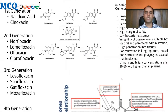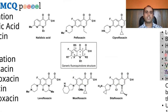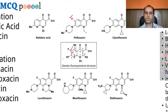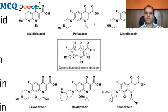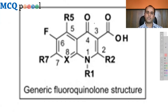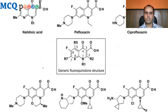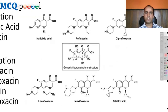Looking at the structure: fluoroquinolones differ from quinolones in that they contain a fluorine group at the R6 (C6) position. This is the basic structure of the fluoroquinolone. We can see that substitutions occur at the R1 and R7 positions in many different compounds, with these positions having been substituted by different groups across generations.